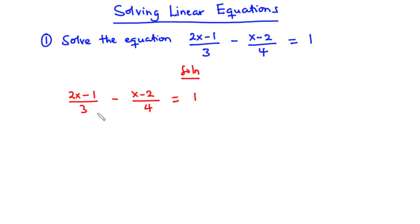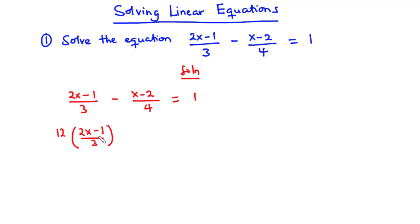We need to do away with the fractions so that we can solve for x. To do that, we need to find the LCM between the denominators. We have 3 and 4, and the LCM between 3 and 4 is 12. So we are going to multiply each term of this equation by the LCM, which is 12. We have 12 times (2x minus 1) over 3, minus 12 times (x minus 2) over 4, equals 1 times 12.